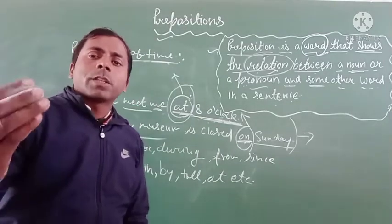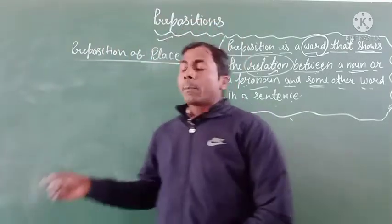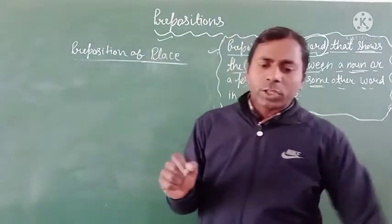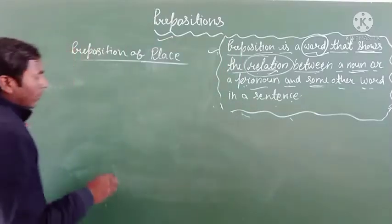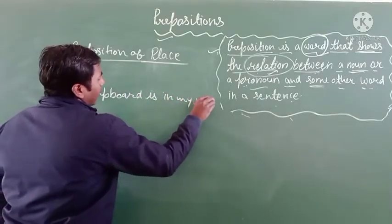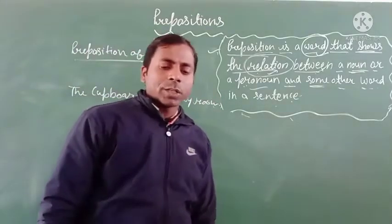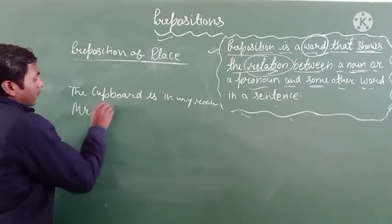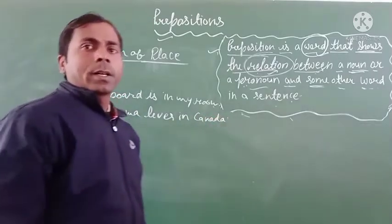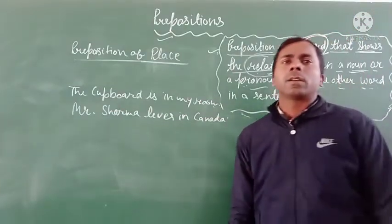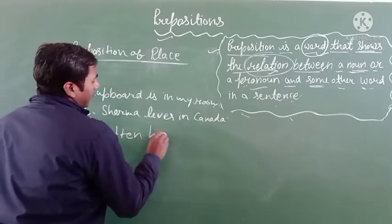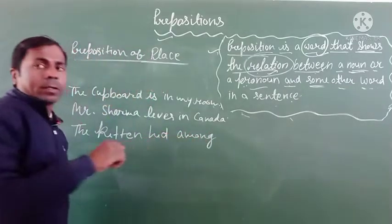Next we are talking about the preposition of place. I will write some examples. The cardboard is in my room. Mr. Sharma lives in Kanada. The keychain hid among the bushes.